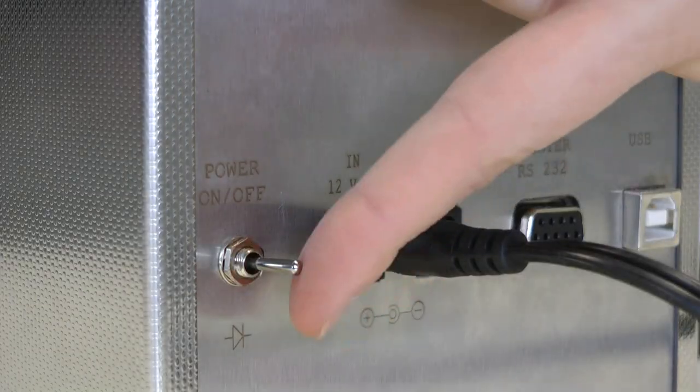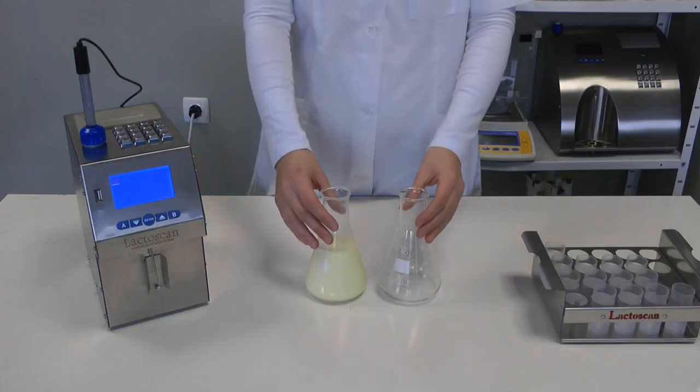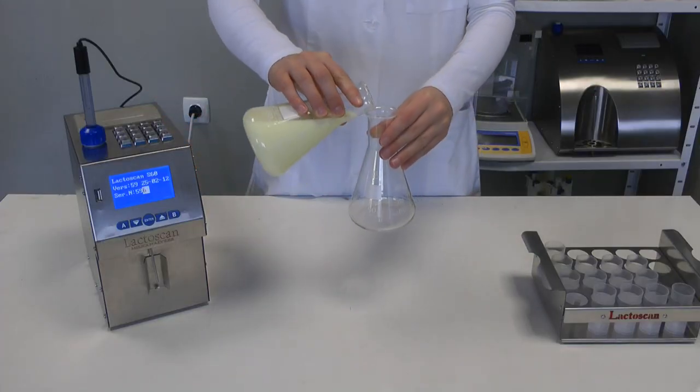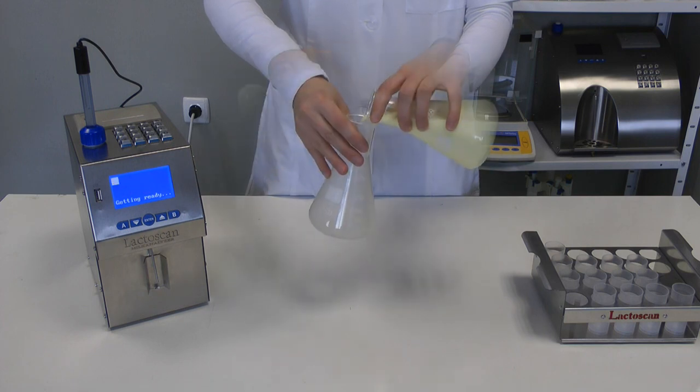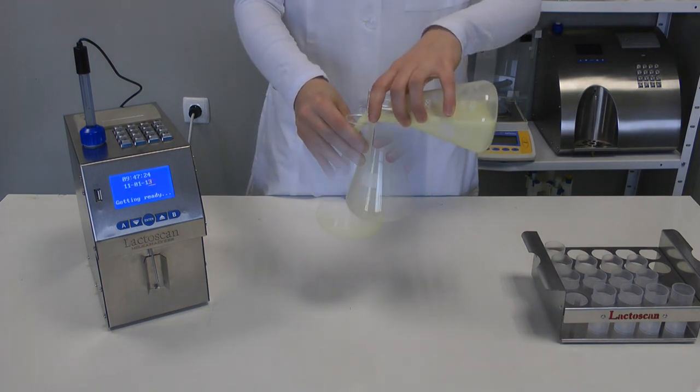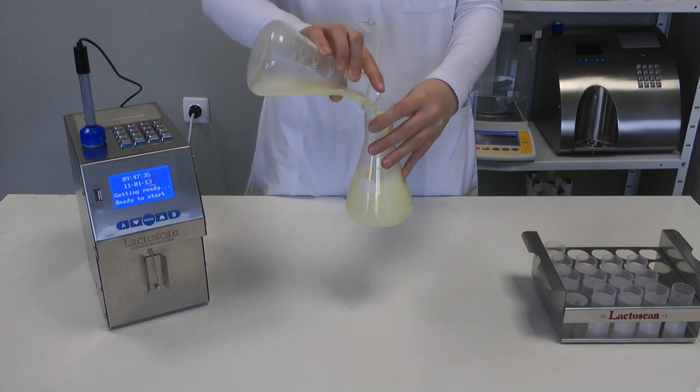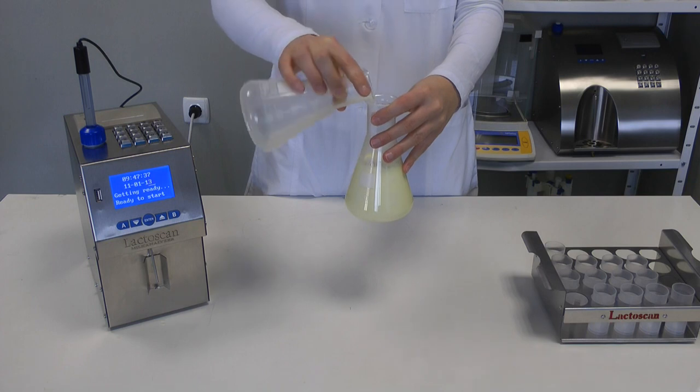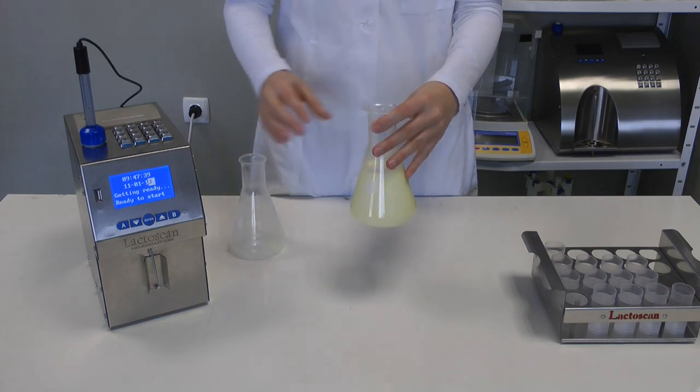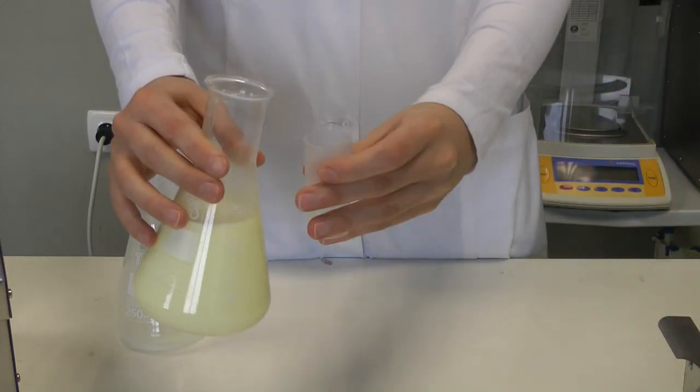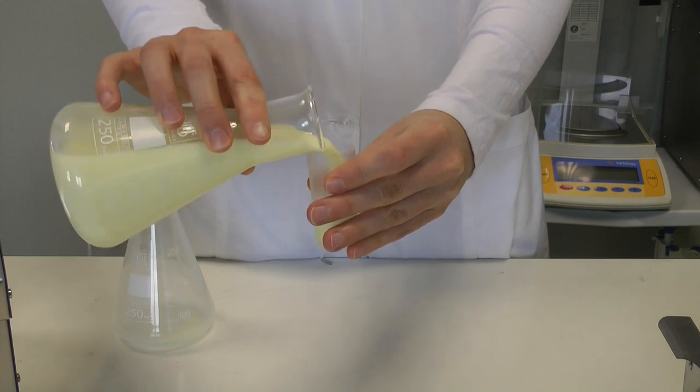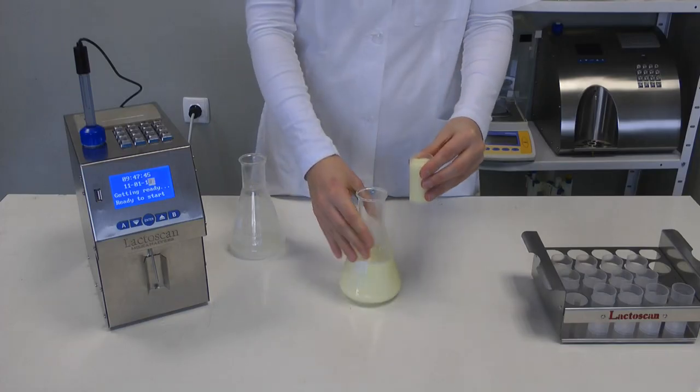Switch on the analyzer. Till the analyzer is prepared for work, the message getting ready is on the display. When it is ready, display shows ready to start. Milk sample must be with temperature at about 25 degrees centigrade. To start measurement, pour the preliminary prepared sample in the sample holder of the analyzer. Put the sample holder in the analyzer.